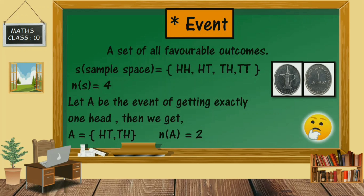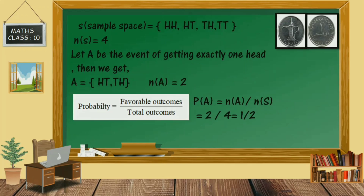Note that here there will be no possibility for 2 heads or 2 tails. If you are asked to find the probability of this event, it can be calculated with the help of the formula: Probability equals number of favorable outcomes divided by total number of outcomes. So that means number of A divided by number of S equals 2 by 4.